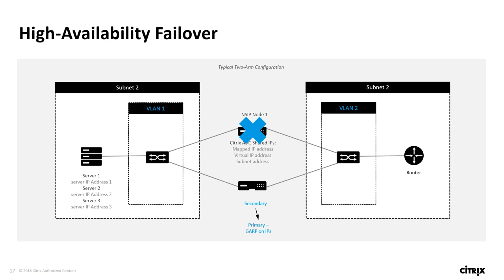When there is an interface failure or SSL card failure, the primary contacts the secondary and notifies it of the failure. The primary demotes itself to secondary and the secondary promotes itself to primary, then performs a gratuitous ARP call on all Citrix ADC IPs. When there is a heartbeat failure, the secondary looks for the lost heartbeat. If it exceeds the lost heartbeat threshold, it promotes itself to primary status. If you issue the stay primary command on the primary device, it gets preferred node status and will fail back when it recovers.